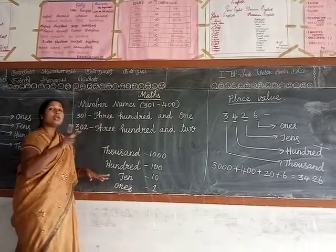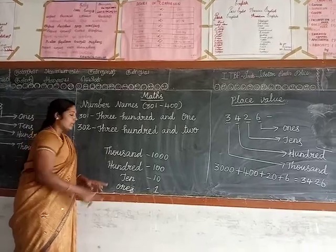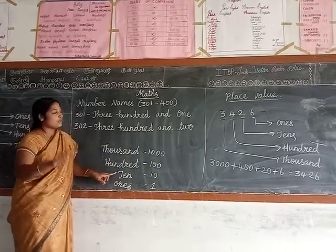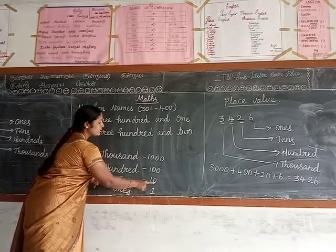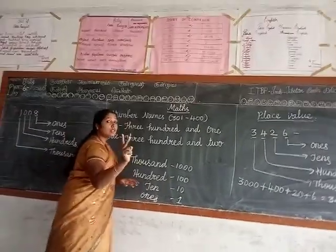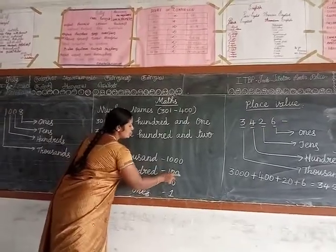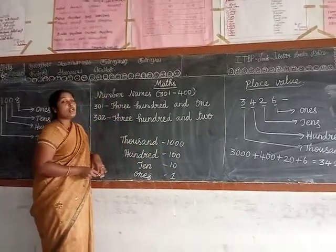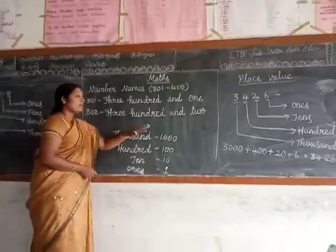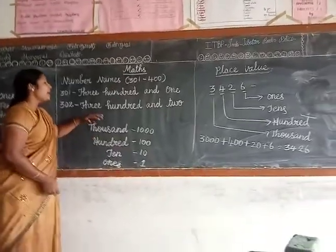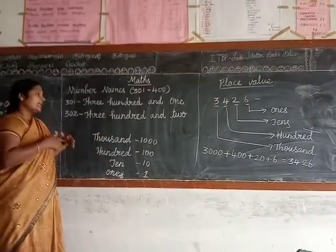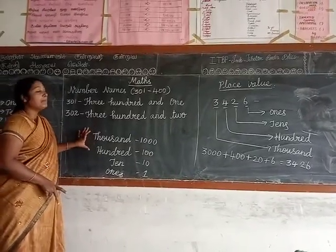For 1, we don't add any zeros. But for 10, how many zeros? 1 zero — so we add one 0. For 100, how many zeros? 2 zeros — so we put two 0s. For 1000, how many zeros? 3 zeros. After 1000 comes 10,000 — that needs 4 zeros. Then lakhs, 10 lakhs, and so on. Today we will see up to 1000.